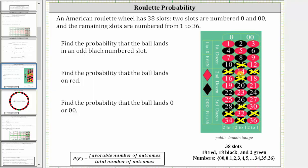Therefore there are eight favorable outcomes out of a total of 38 outcomes, because there are 38 slots. And therefore the probability of the ball landing in an odd black numbered slot is eight 38ths. But this does simplify.